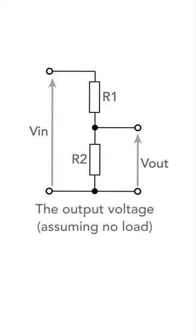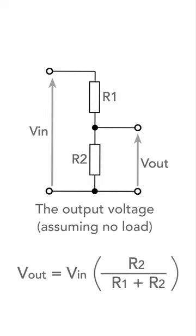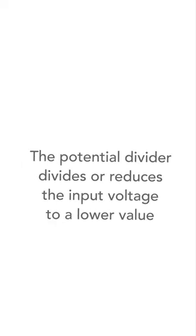This means the output voltage can be calculated from the formula we see here. The output voltage is the value of the bottom resistor divided by the total resistance of the chain times the input voltage. In this way it divides the input voltage down to a lower value.